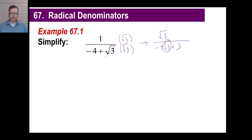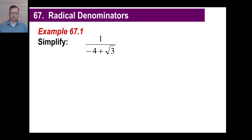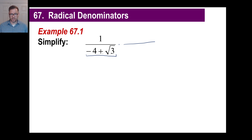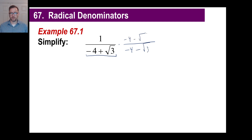So we're going to have to try another tactic here, and this tactic is something called a conjugate. What you're going to have to do is multiply the top and the bottom by this exact term, except you are going to change the sign in the middle of the term. You won't change the sign of the first part — you'll just change the sign of that middle term. So the conjugate of negative 4 plus the square root of 3 is negative 4 minus the square root of 3. And of course, you do the same thing to the numerator since it's a fraction.